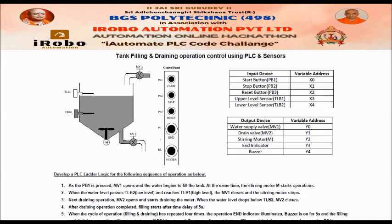When the start button is pressed, both valve MV1 opens and the stirring motor turns on simultaneously. When the water level reaches the low level, filling continues. When it reaches the high level, MV1 closes — meaning filling is stopped — and the stirring motor also stops.